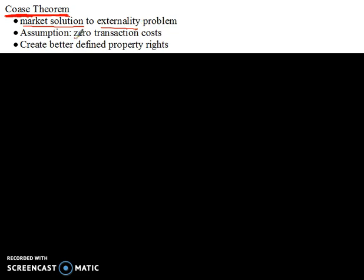We are going to assume zero transaction costs. This is a huge assumption and it's almost never true, but let's make that assumption to get started on developing the idea. We'll talk about how transaction costs get in the way of a Coasean solution later. The big idea with the Coasean solution is to create better-defined private property rights. Instead of using Pigouvian taxes and subsidies — which have the problem of measurement — we just leave it to the market by creating better private property rights.